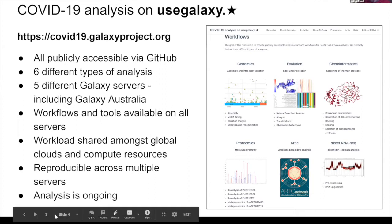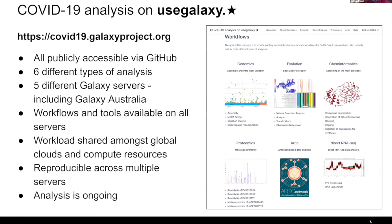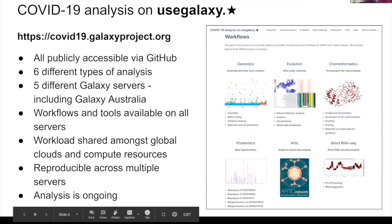I am part of the COVID-19 analysis group as part of the Galaxy Project. All of the analysis I'm going to be talking about today can be found on the covid19.galaxyproject.org page. There are six different types of analyses hosted on this page across a number of different servers. Analysis is ongoing, but feel free to check this out and dig into the analysis if you're interested.